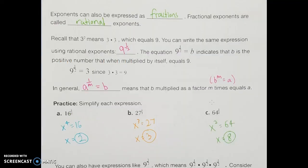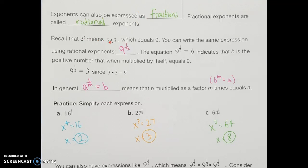Exponents can also be expressed as fractions — these are called rational exponents. For example, 3 squared is 9, so going backwards, 9 to the 1 half power equals 3. In general, a to the 1 over m equals b means that b raised to the m-th power equals a. So the denominator of the fractional exponent tells you how many times to multiply b by itself to get a.